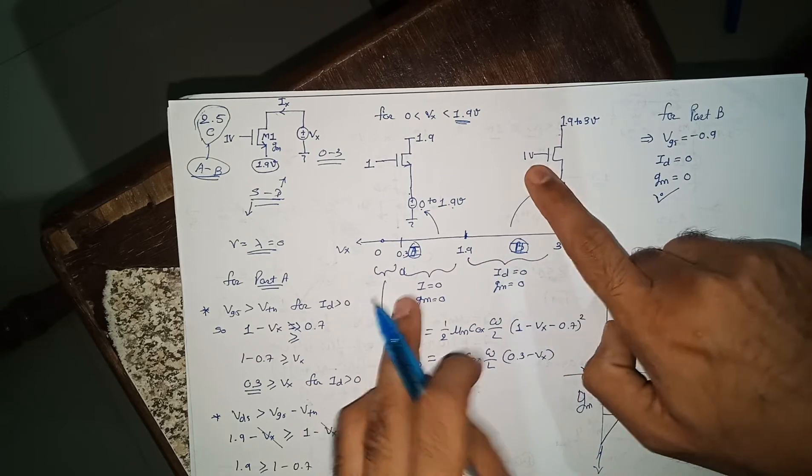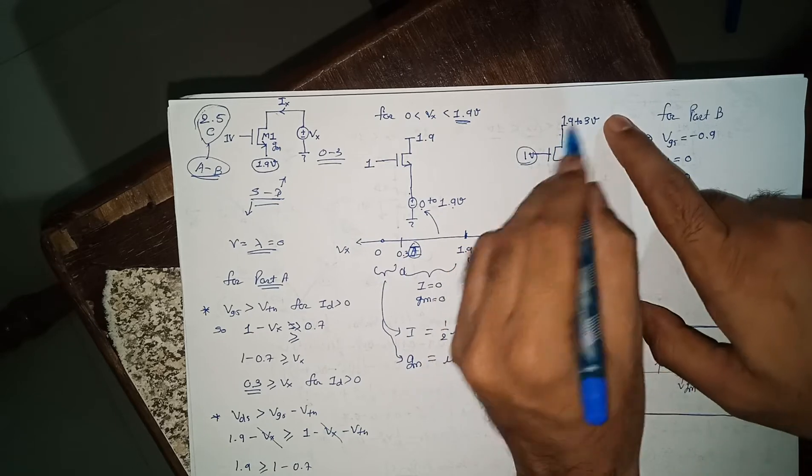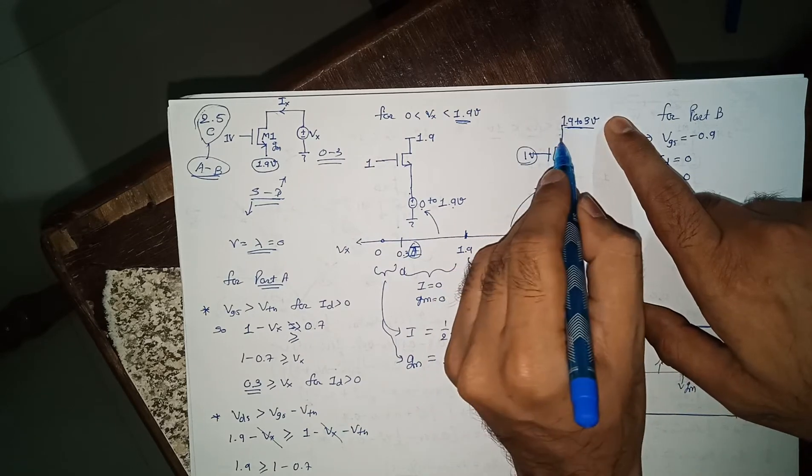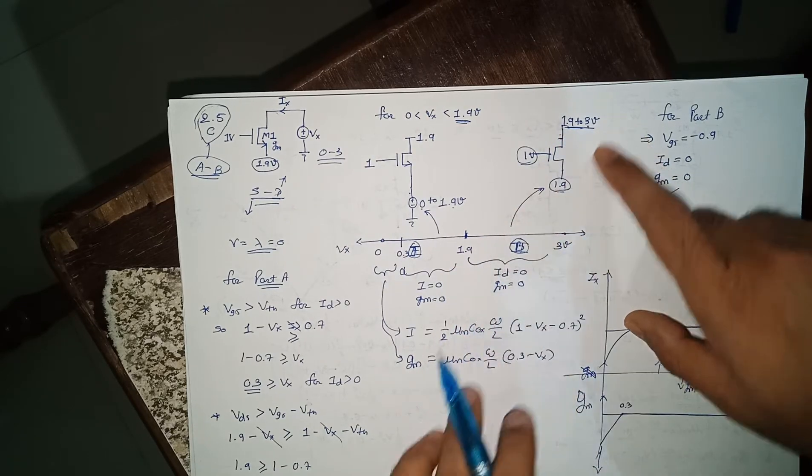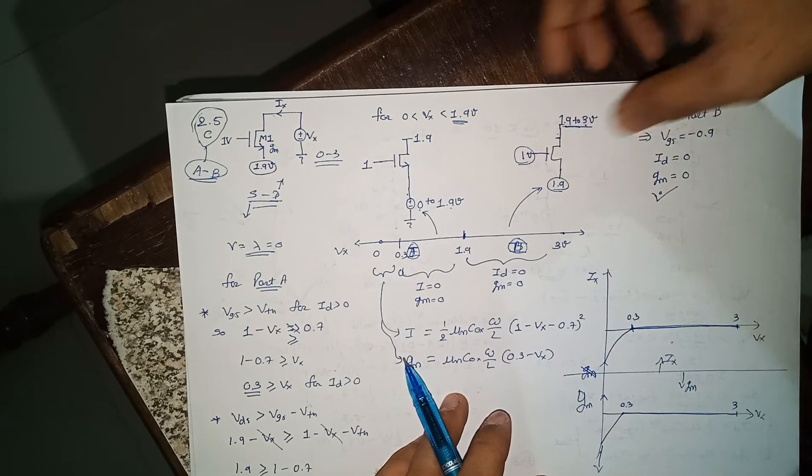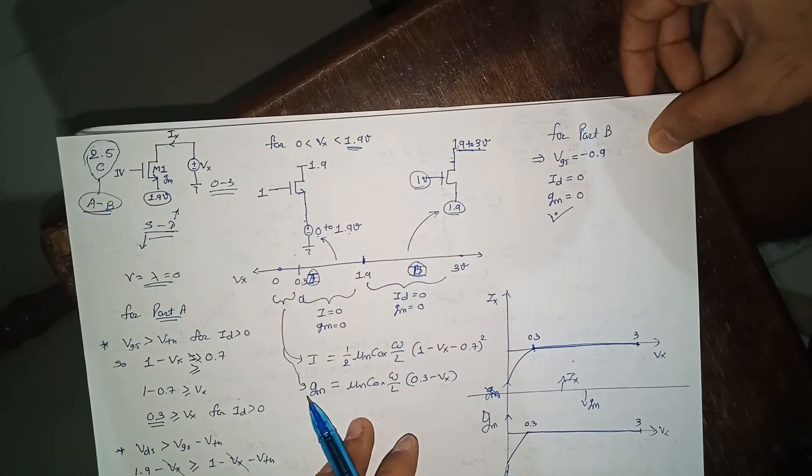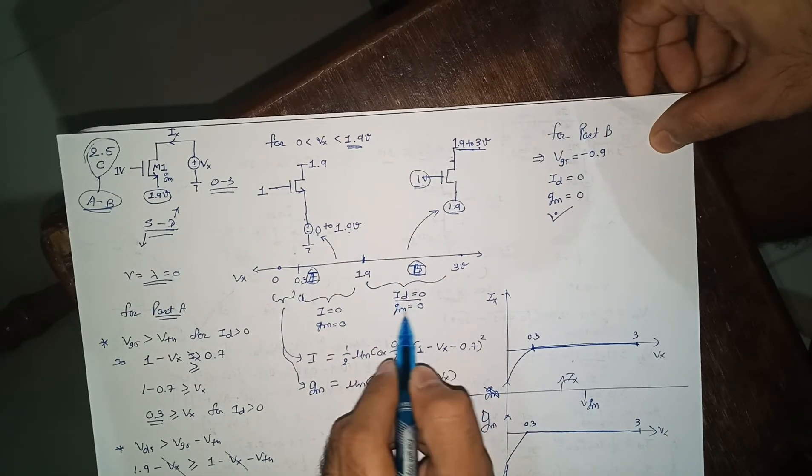For 1.9 to 3, the gate is connected to 1 volt, source is connected to 1.9, and this is drain that is variable from 1.9 to 3. This is very easy part because your Vgs is minus 0.9. So your I is 0, your gm is 0. For this part your ID is 0, gm is 0. You don't need to worry about anything else.